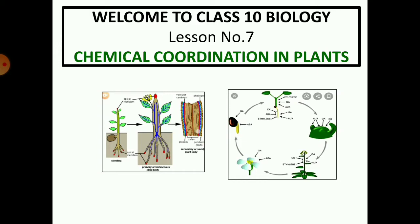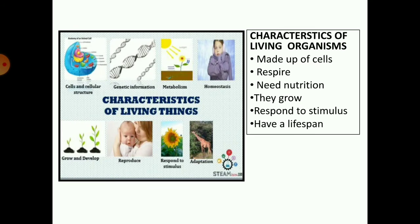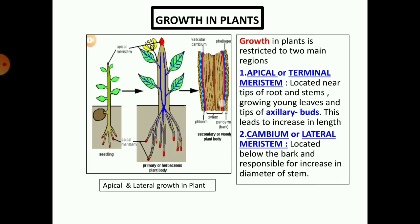Today we are going to start a new chapter: chemical coordination in plants. But before we start the chapter, let us see some of the characteristics of living organisms. Whether they are plants or animals, we know that all organisms are made up of cells, they respire, they need nutrition, they grow, they respond to stimulus, have a lifespan and are capable of reproduction. Growth is a characteristic feature of both plants as well as animals.